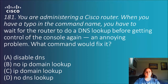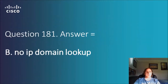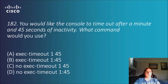Question 181: You are administering a Cisco router and when you have a typo in a command, the router does a DNS lookup and you have to wait before getting control of the console again — an annoying problem. What command would fix it? Options include 'disable dns', 'no ip domain-lookup', 'ip domain-lookup', and 'no dns lookup'. The answer is B — 'no ip domain-lookup' — which disables that function.